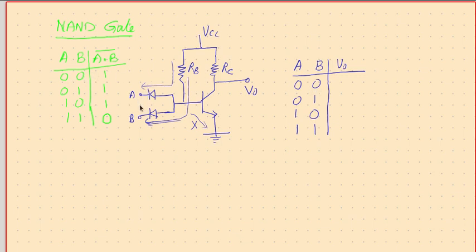Say both inputs are low: this diode is conducting and this diode is also conducting, so current is draining out of this circuit. Hence this point's voltage will go low and no current is available to flow through the base-emitter junction, so the transistor gets into cutoff. If the transistor is in cutoff, there is no collector current, meaning the voltage drop across RC will be zero, and hence the full VCC will be available at VO. So the output is high — logically we say it is one.